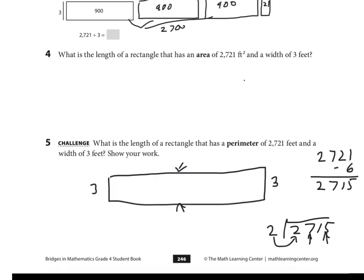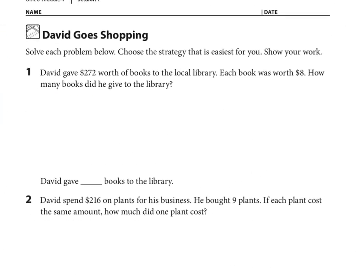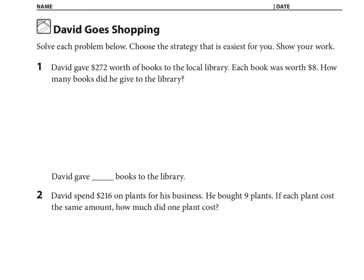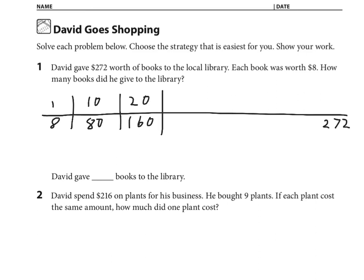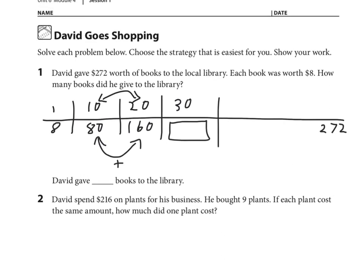We're just going to get into some more practice here. This is the total cost of the books—each book was worth eight dollars. So again we're dividing and I'm going to use a ratio table for this one. One book is eight dollars, so ten books would be eighty dollars, twenty books would be one hundred and sixty dollars. Let's add these two together, so thirty books would be how much? And then you've got a little bit more to go.